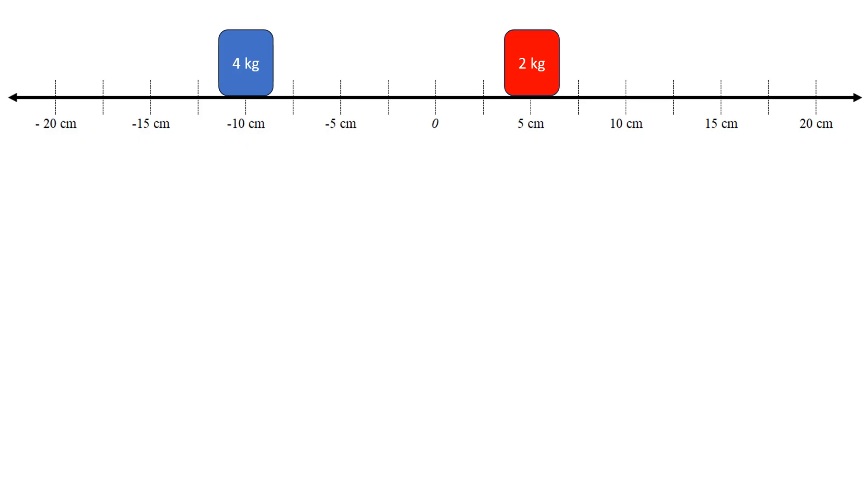Let's look at a simple example. Suppose on this number line, I have a four kilogram object at a position of negative 10 centimeters and a two kilogram object at a position of positive five centimeters. Let's calculate the position of the center of mass. The first thing I do is substitute in the masses into the denominator to remind myself that I need to include all of them regardless of where they are. If something has a position of zero you may not include it in the numerator but you still have to include it in the denominator.